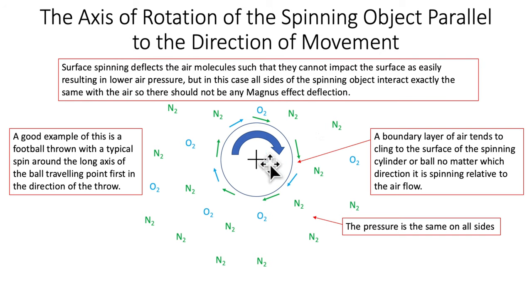And with all these spinning balls and cylinders, you do have a boundary layer clinging to the surface. But the pressure here should be the same on all sides. A good example of this would be a football thrown with a typical spin around the long axis and traveling point first in the direction of the throw. So what we're going to do now is go into the shop and do a few experiments and just demonstrate these things.